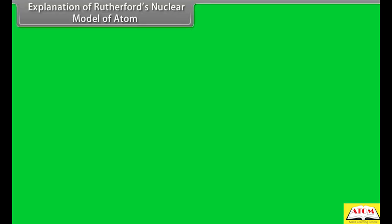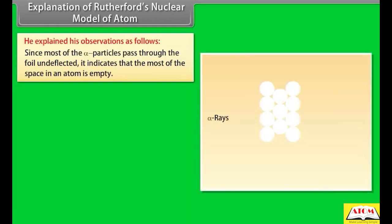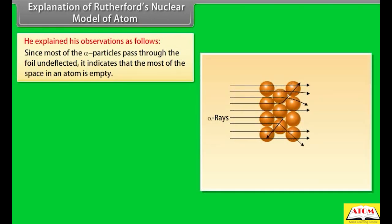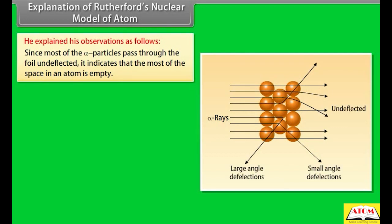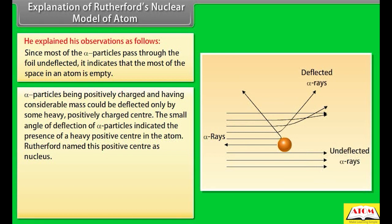Explanation of Rutherford's nuclear model: 1. Since most alpha particles pass through the foil undeflected, it indicates that most of the space in an atom is empty. 2. Alpha particles, being positively charged and having considerable mass, could be deflected only by some heavy positively charged center. The small angle of deflection indicated the presence of a heavy positive center in the atom. Rutherford named this positive center the nucleus.